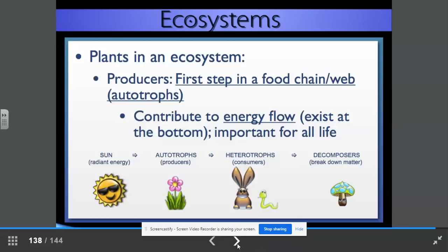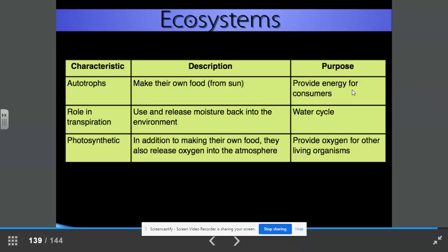So again, autotrophs make their own food. They get their energy from the sun and they provide energy for consumers, the animals that consume them. They have a role in transpiration. They use and release moisture back into the environment. And this is present in the water cycle. They photosynthesize. They are photosynthetic. In addition to making their own food, they also release oxygen into the atmosphere. This provides oxygen for other living organisms.